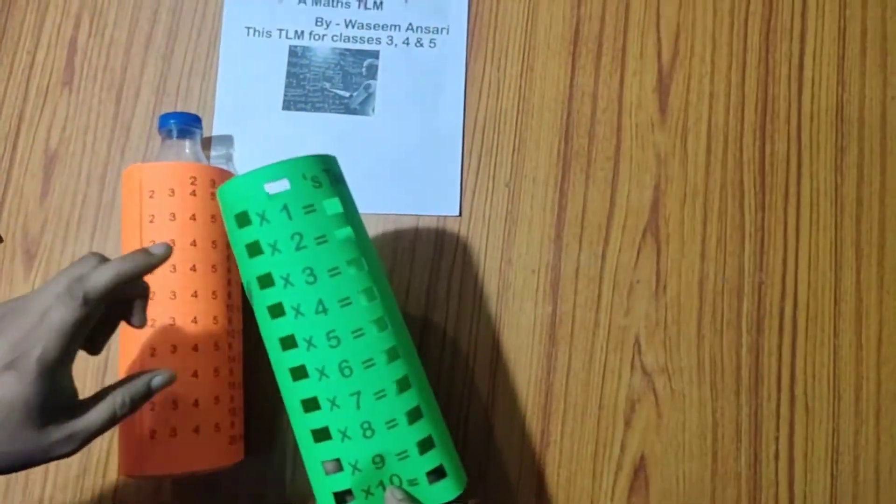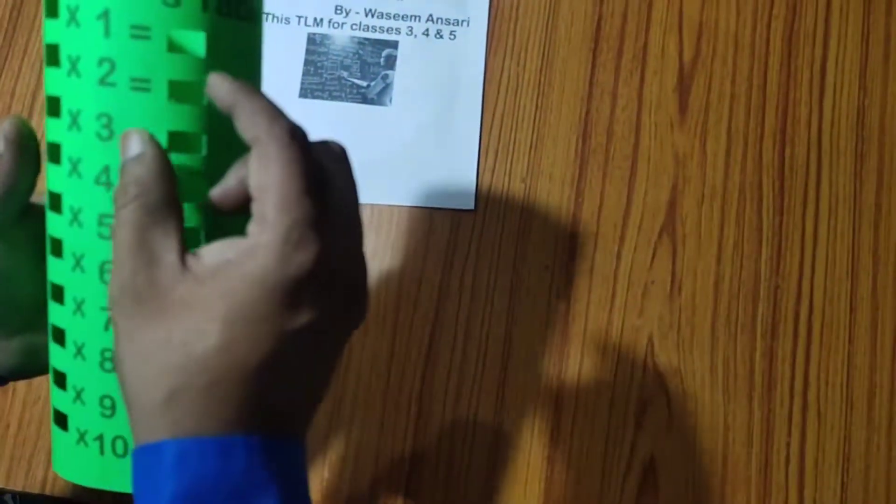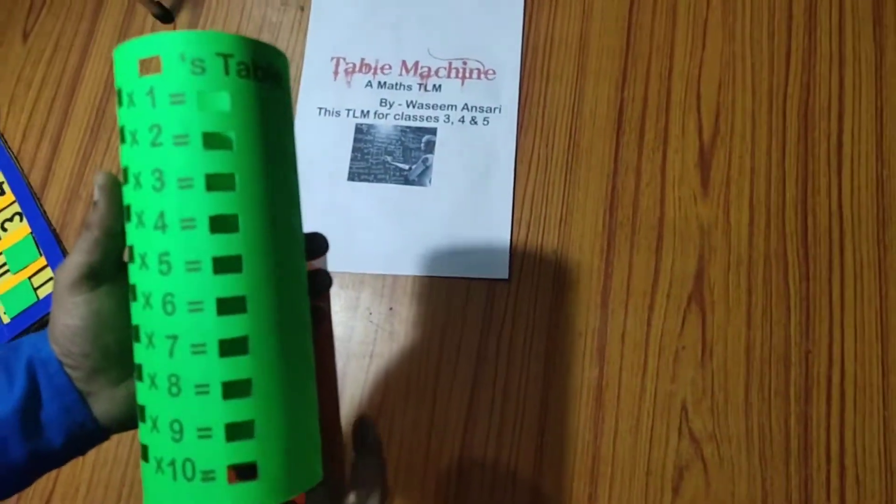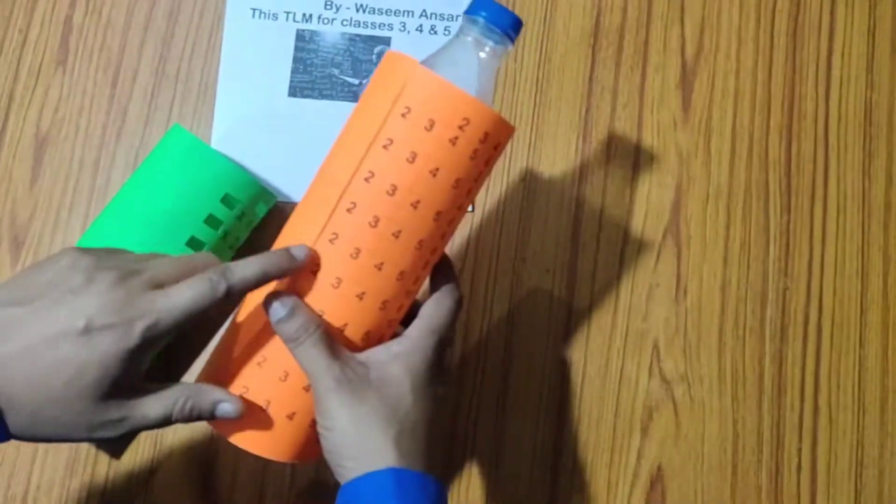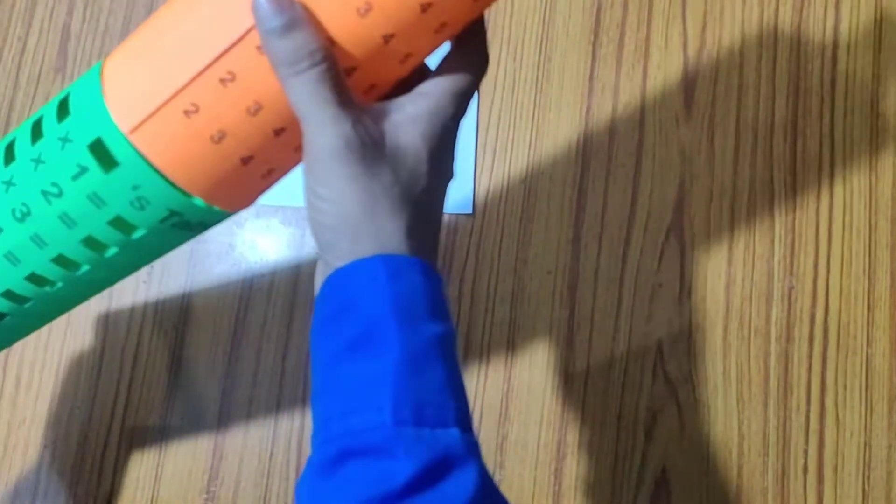And to show only the table numbers which are respective with these numbers, we have slotted out, we have carved out some windows on another sheet. And this is a little bit bigger than the original sheet which we have pasted on the bottle.